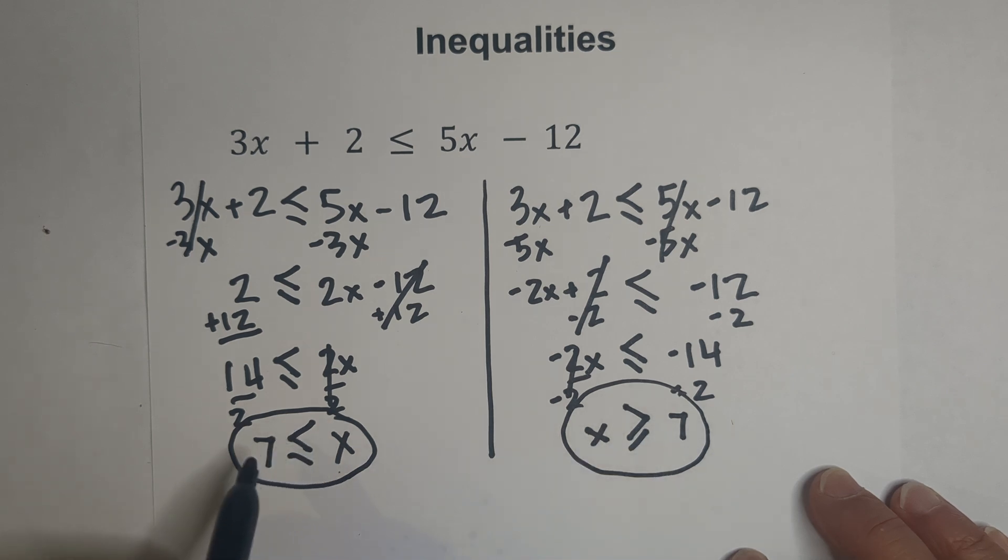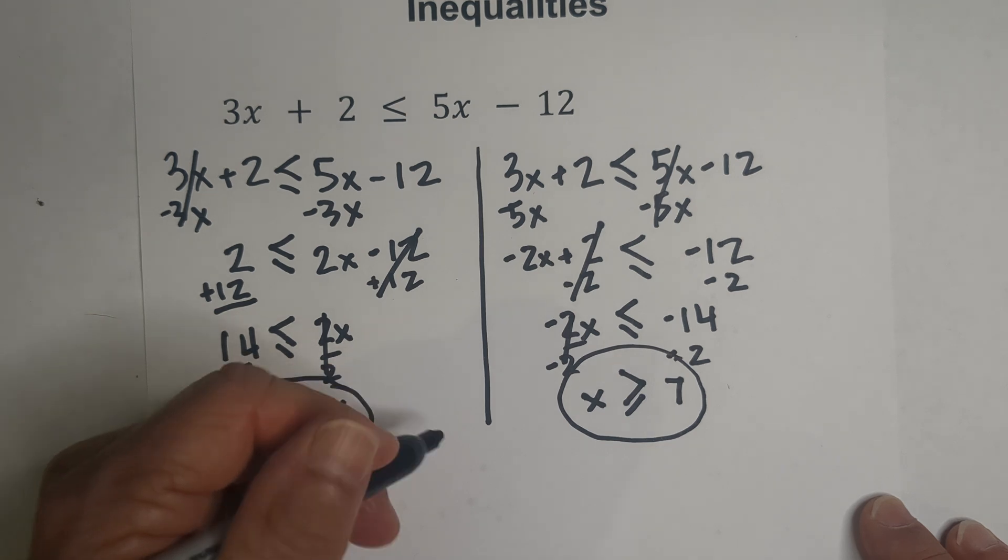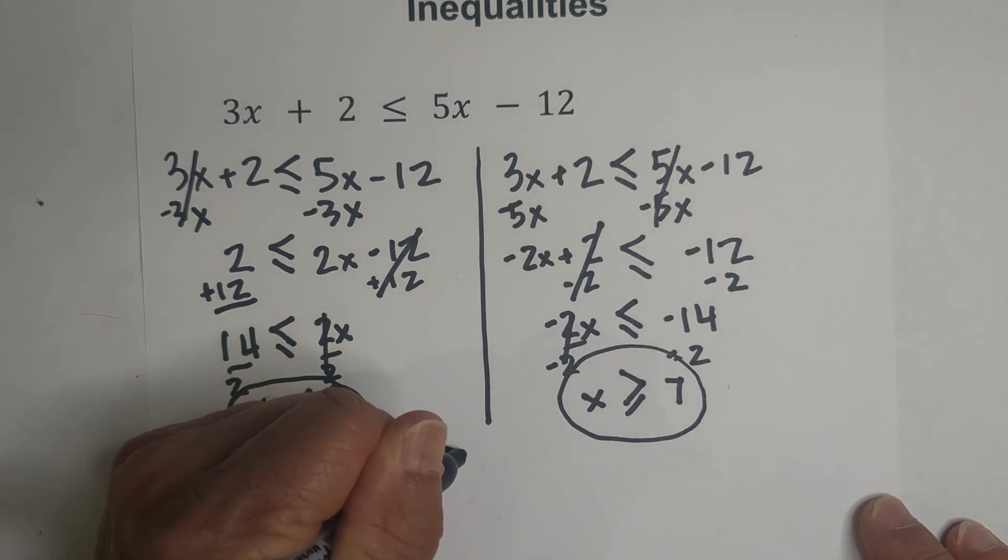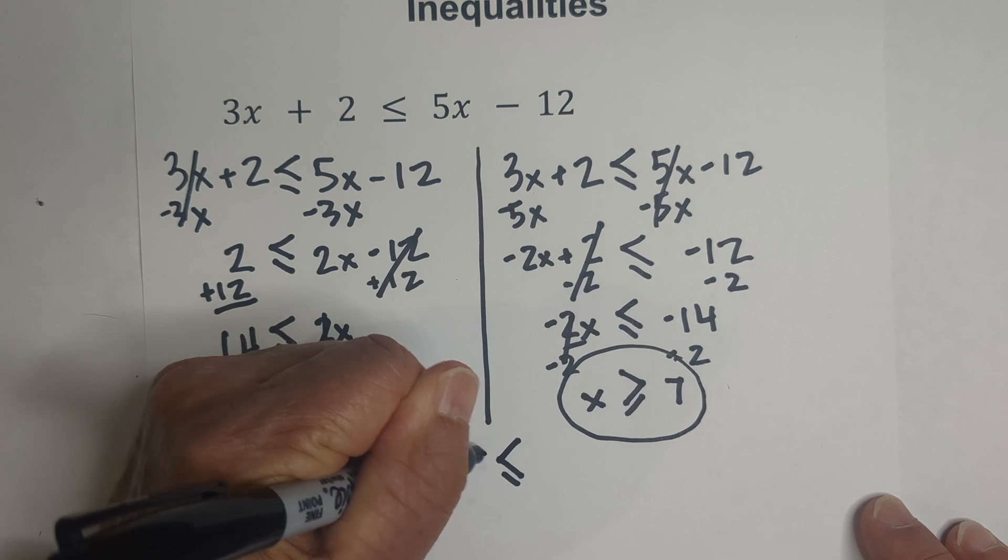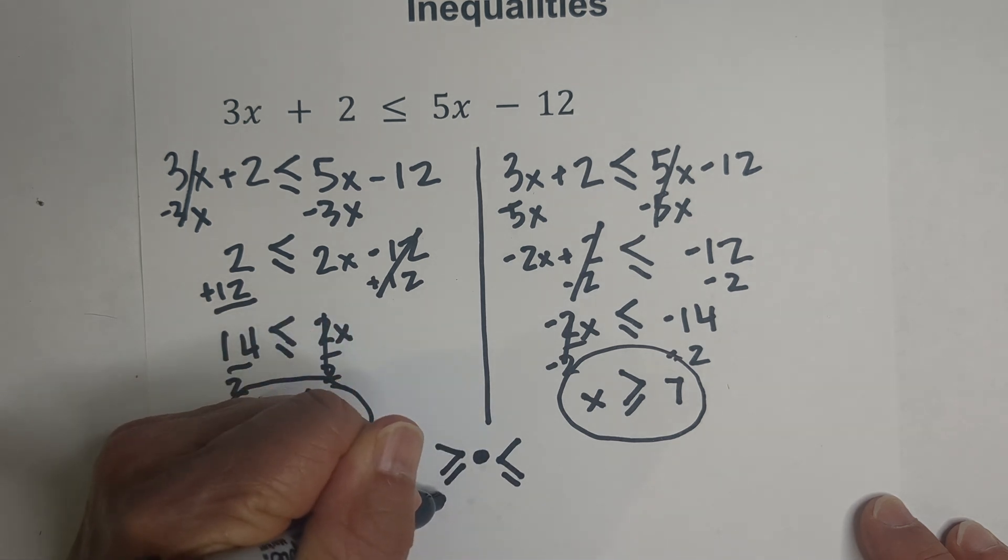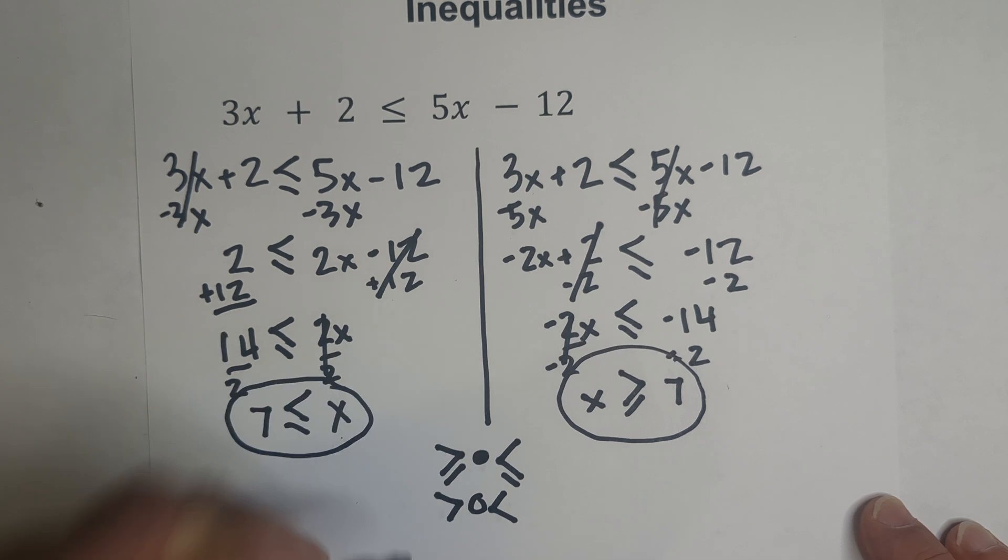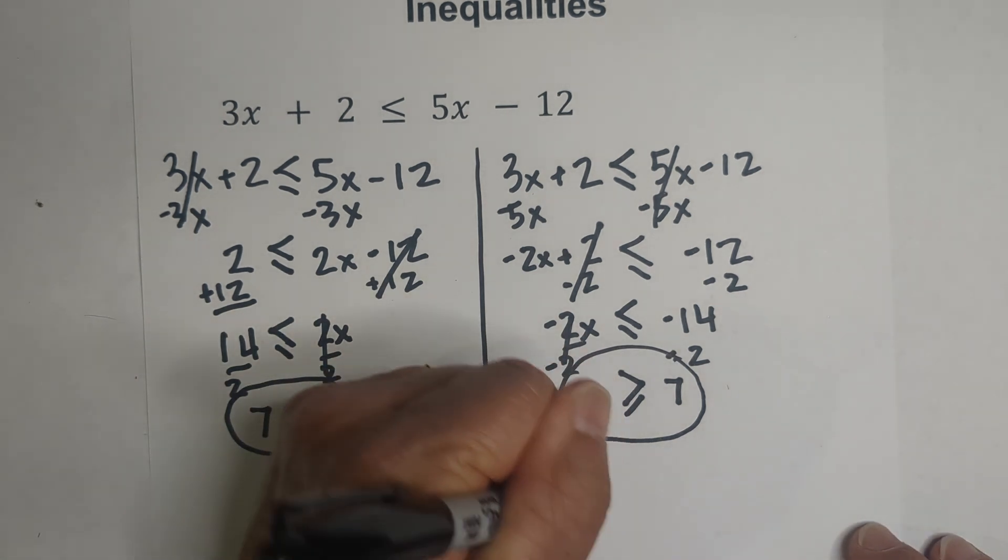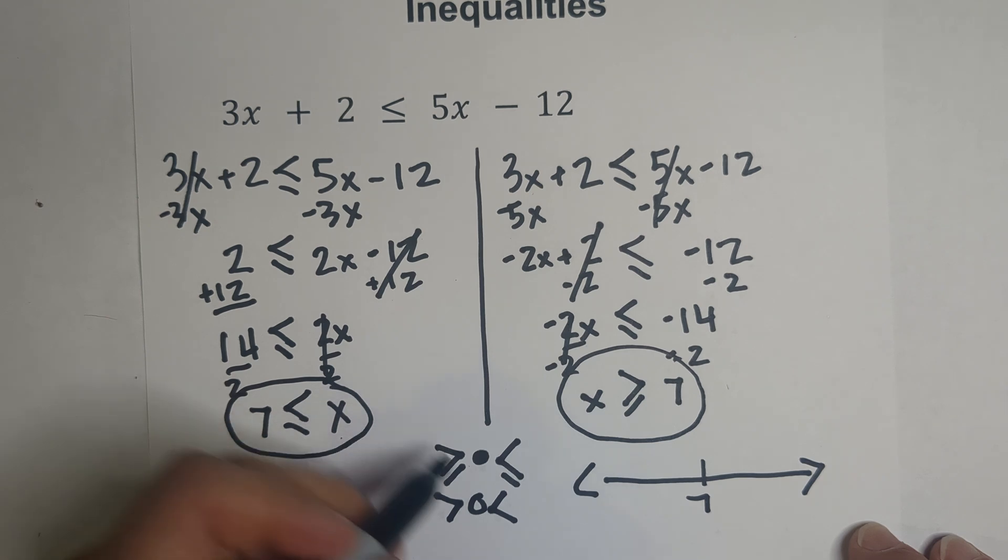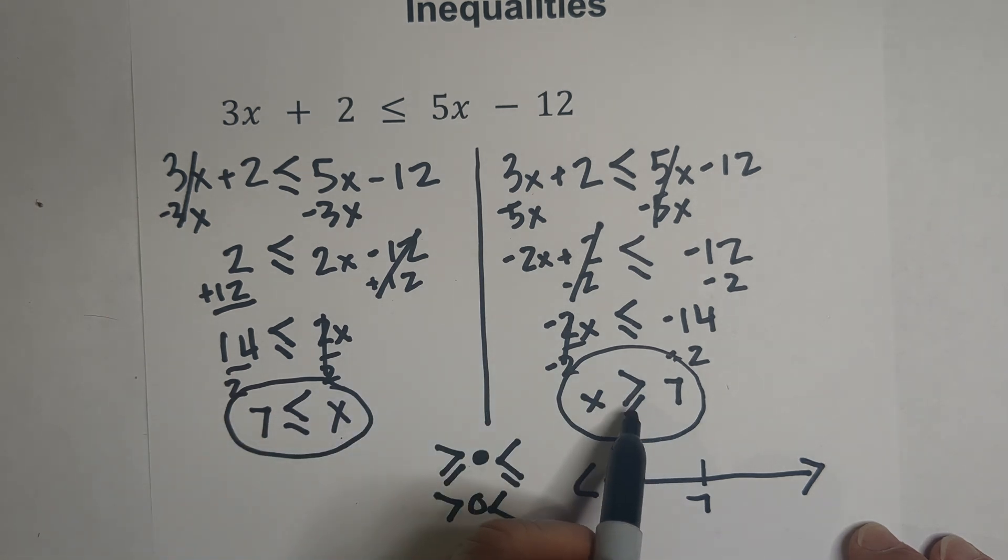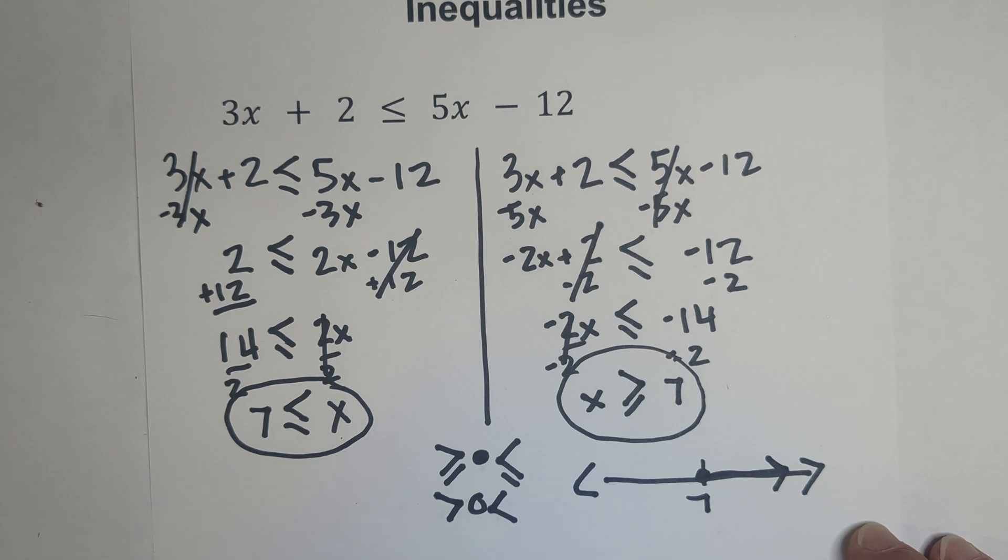Now we need to place it on the number line. Remember, if it's greater than or equal to or less than or equal to, it's closed. And if it's greater than or less than, it's open. So I'm going to do a number line. I'm going to place 7 on there. Since it is greater than or equal to, it's going to be closed, and the arrow goes to the right.